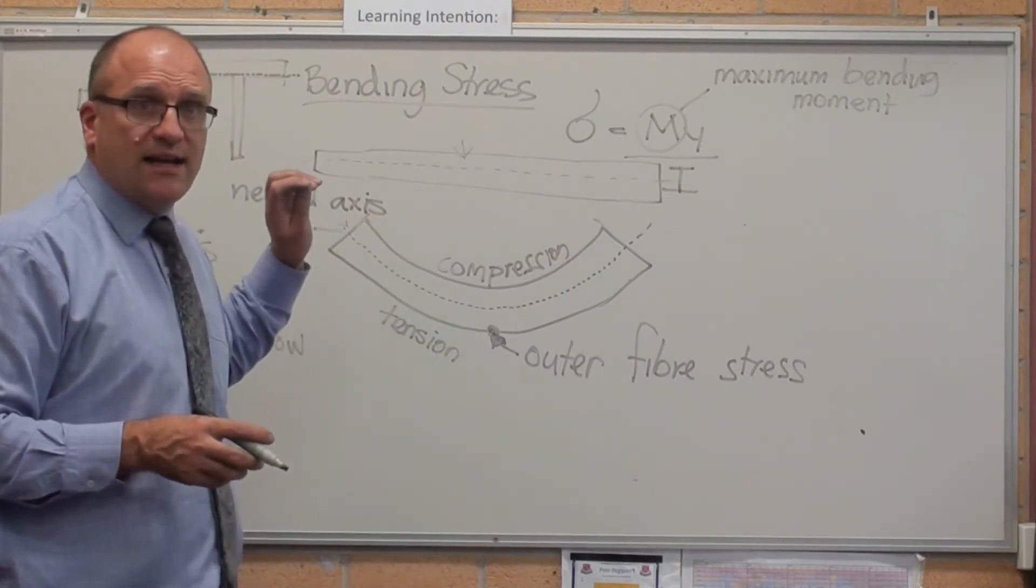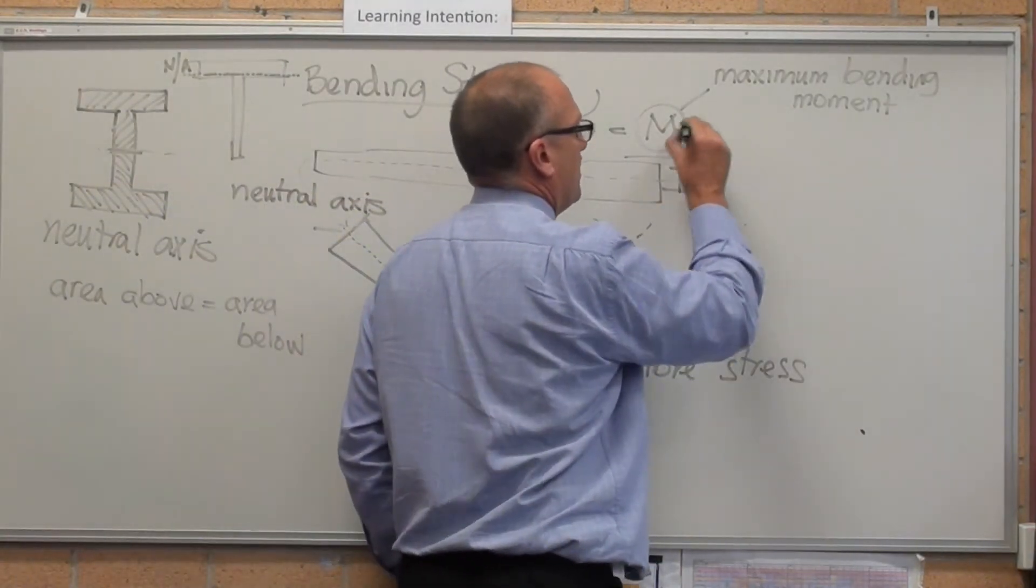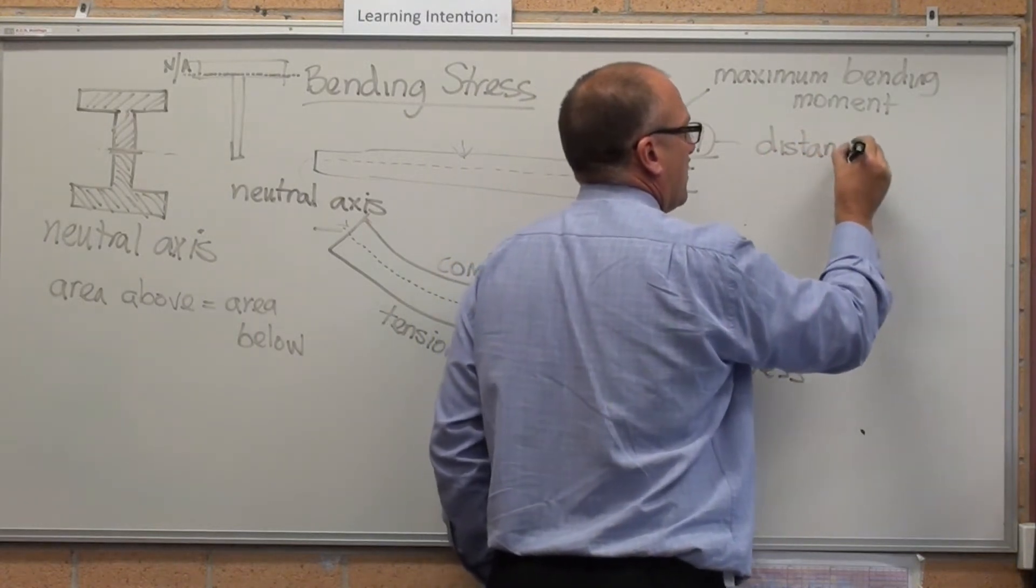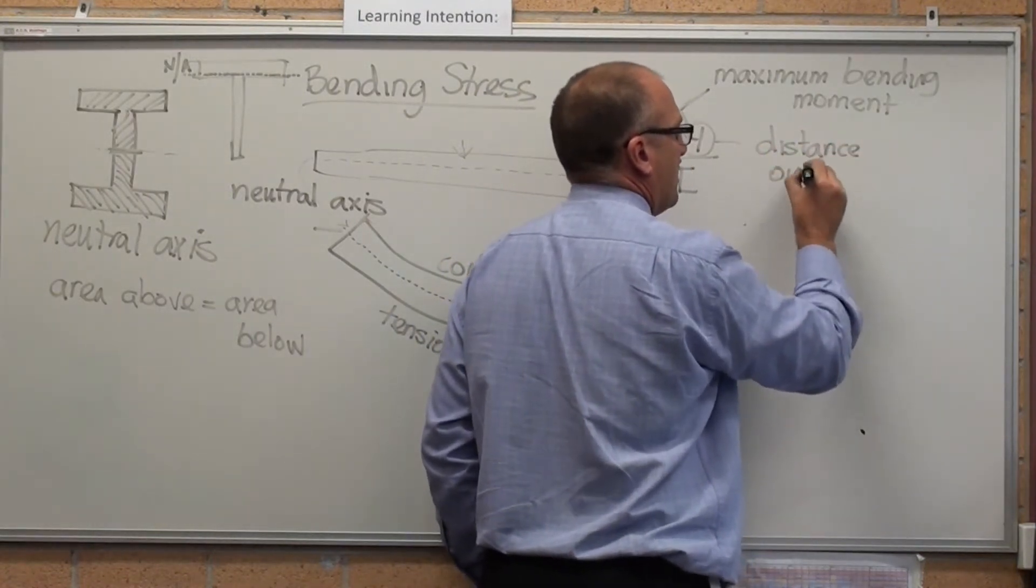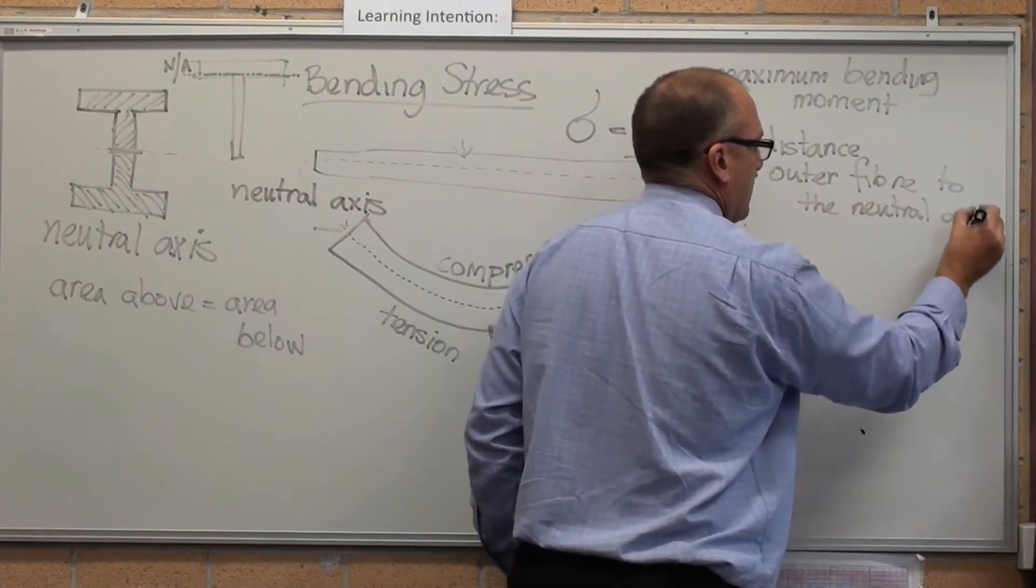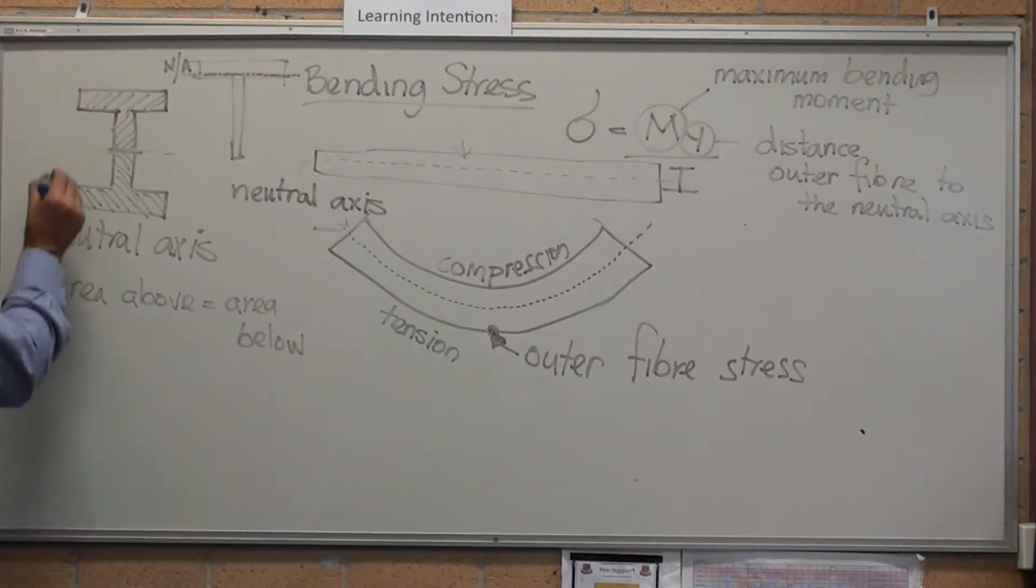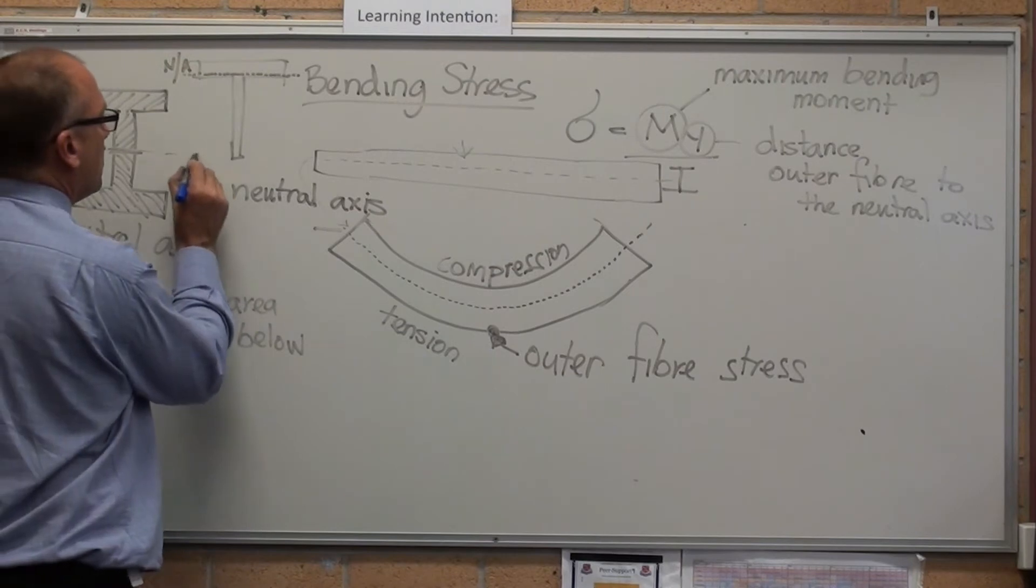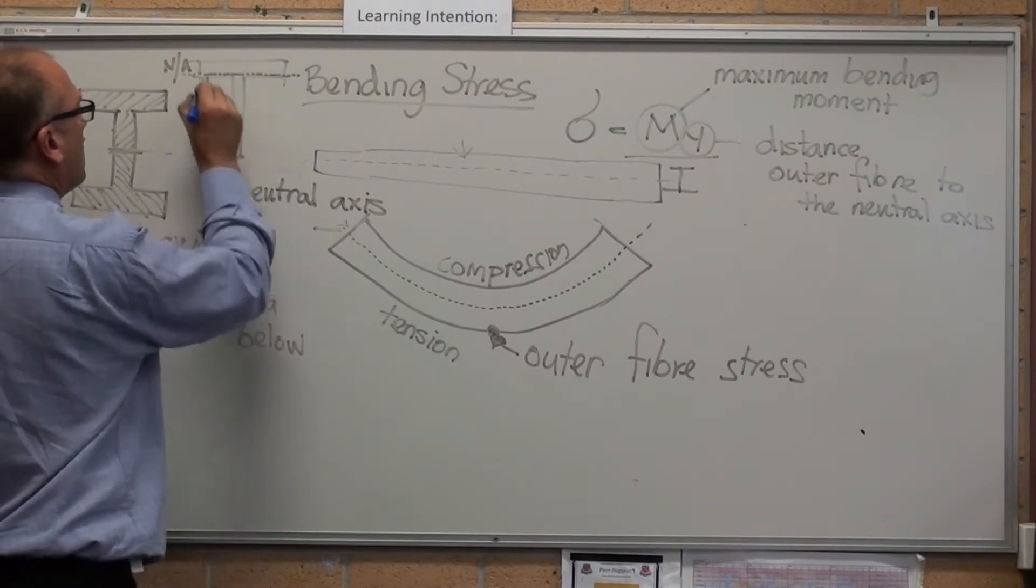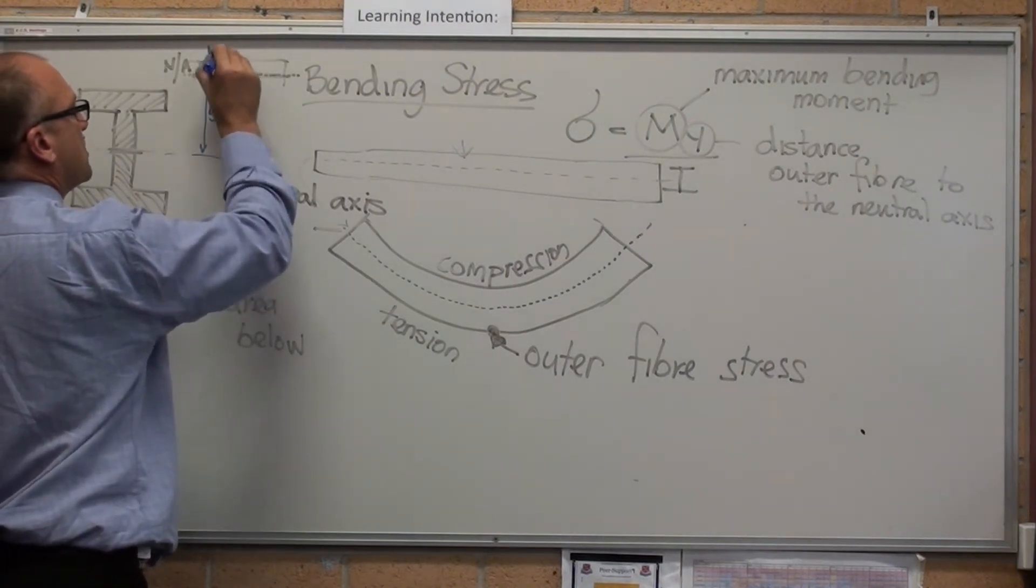You just care about where is it under the most force and the most bending. Y is the distance from the outer fiber to the neutral axis. That's really important because here on an I-beam it's the same. That distance there equals that distance there.